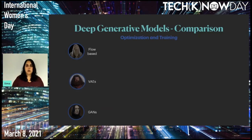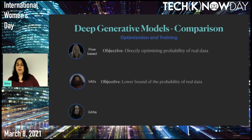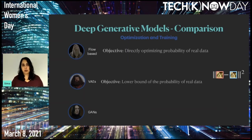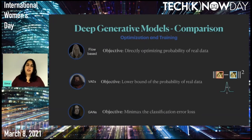There are some recent papers on VAEs that are able to generate high-resolution images, but it is much harder to do with this method and requires a lot of engineering. Looking at the optimization: flow-based models optimize our holy grail — the probability of real data — while VAEs optimize the lower bound with two terms, reconstruction and regularization, that have a trade-off between them.